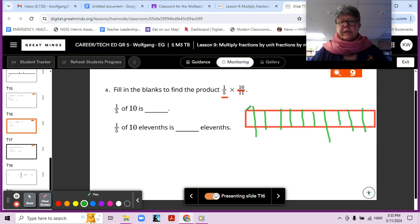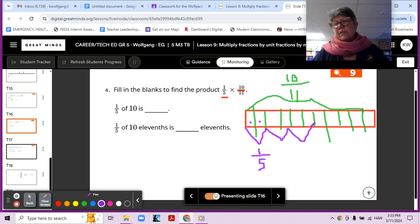We have 10 elevenths, and we want one fifth of 10 elevenths. Well, we know there's 10, so that means that in each fifth, there's going to be two. One fifth equals two. And how do I know that? Because I can put two into each fifth. See that? One fifth, two fifths, three fifths, four fifths, five fifths, because five times two is 10.